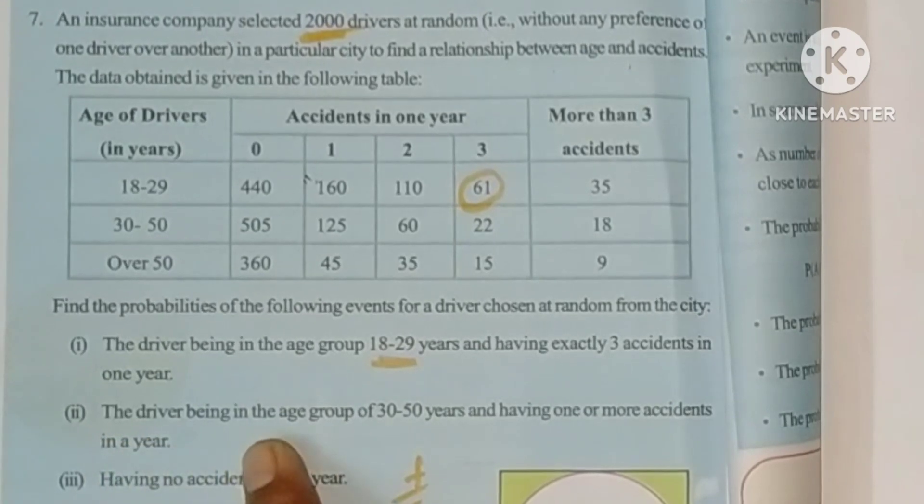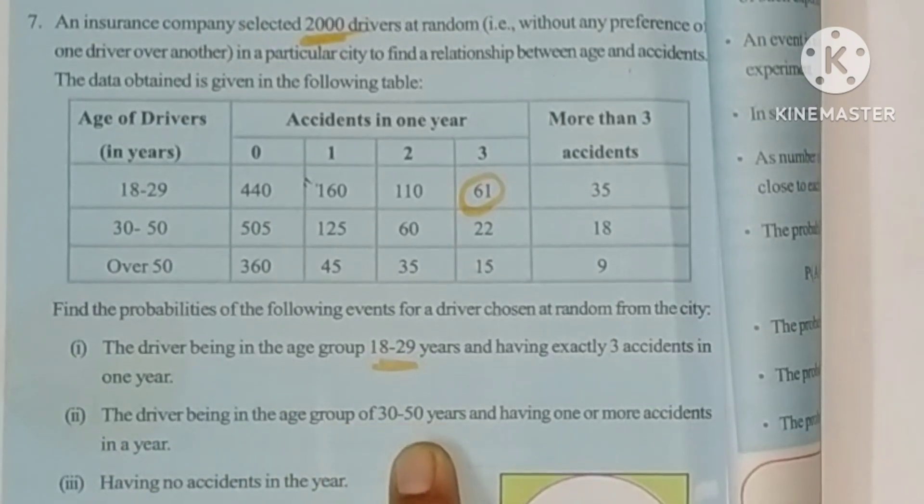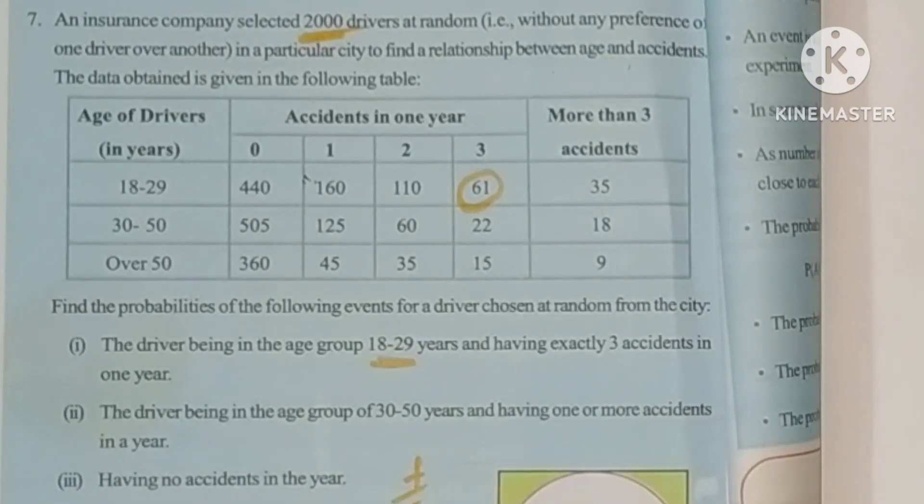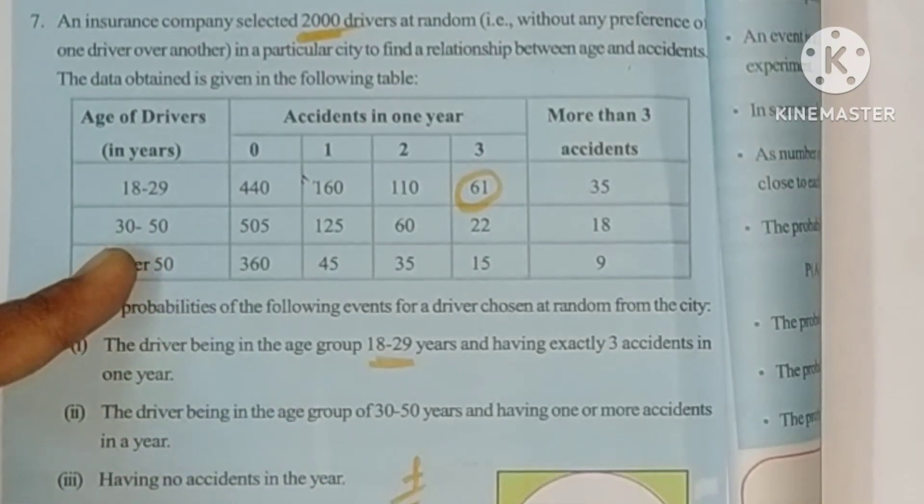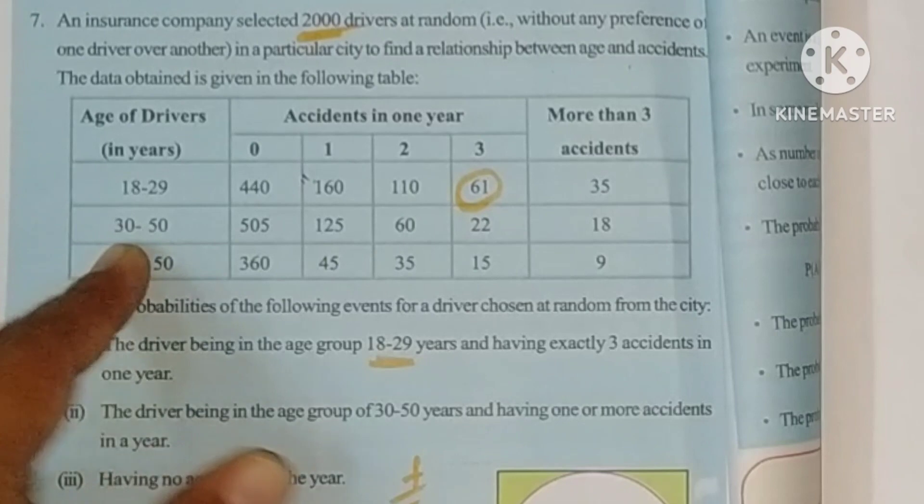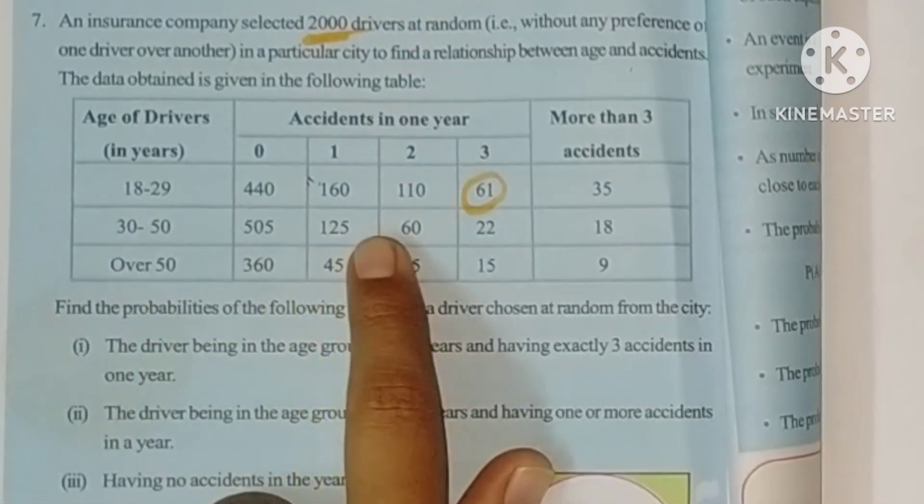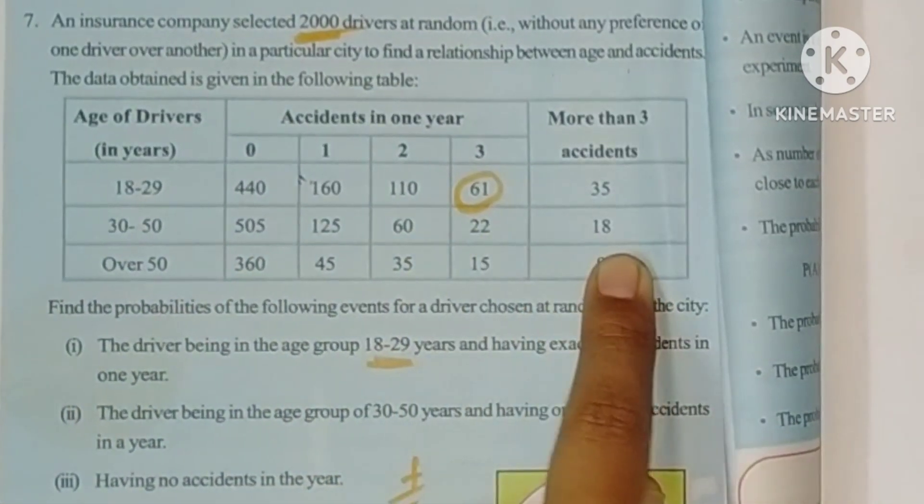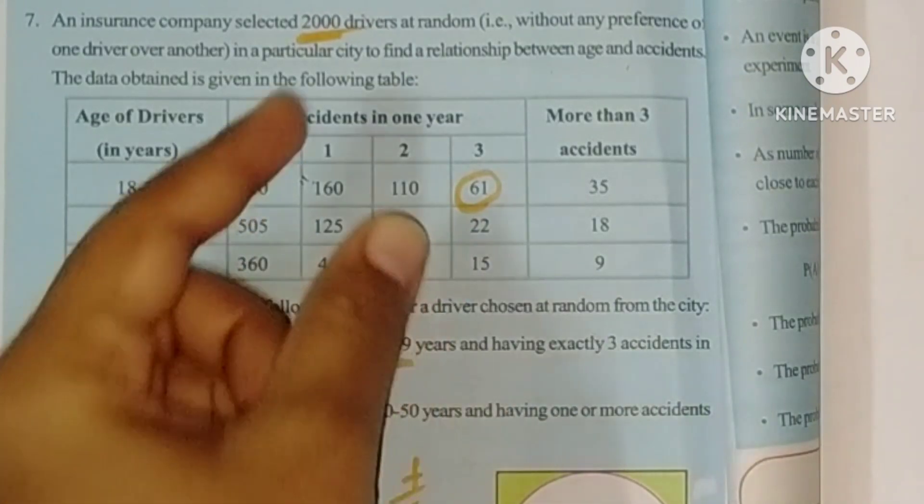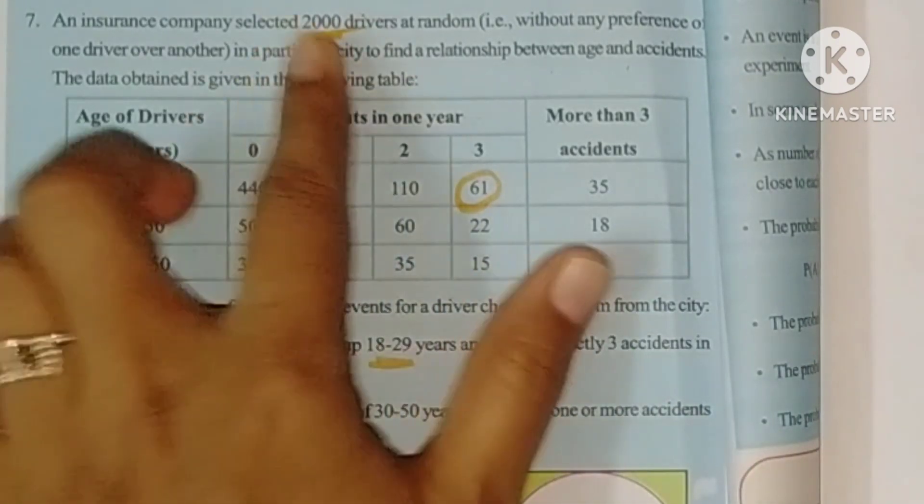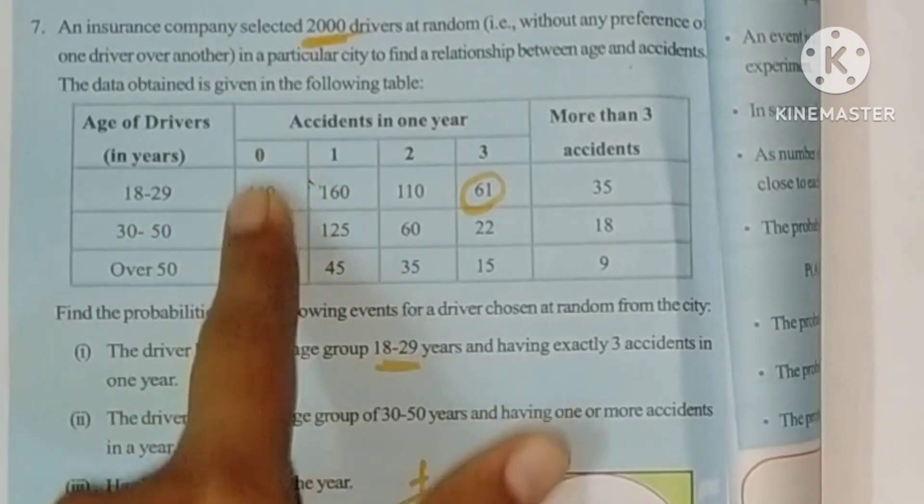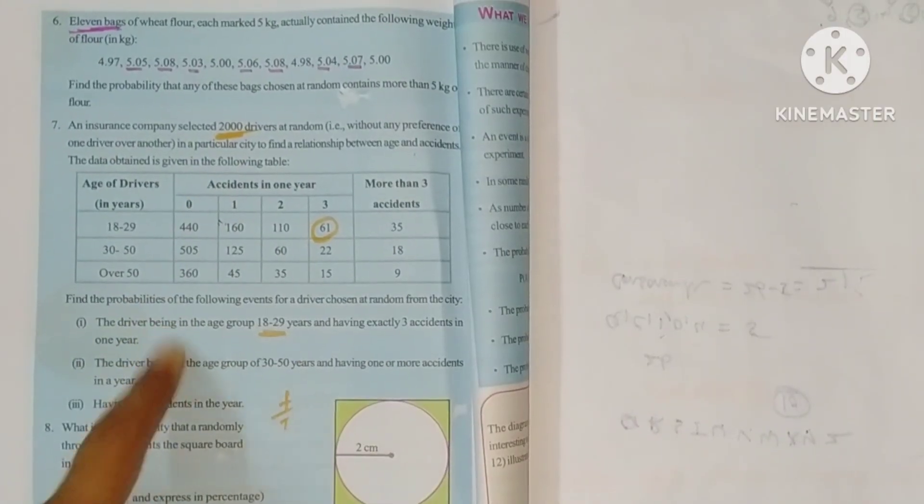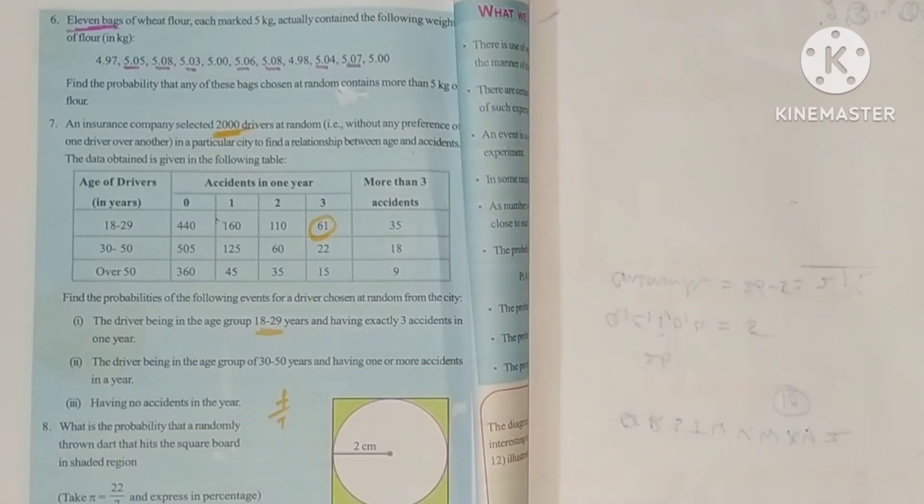Second: The driver being in the age group of 30 to 50 years and having one or more accidents. So 30 to 50, one or more accidents: 125 plus 60 plus 22 plus 18. That's favorable outcomes, total outcomes is 2000. Third: Having no accidents in the year. That's the zero column, all added up.